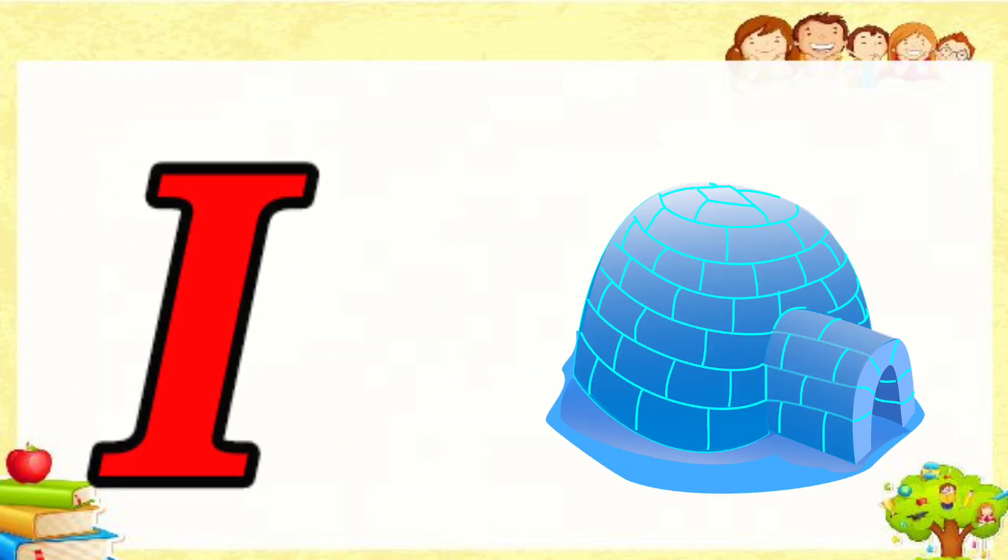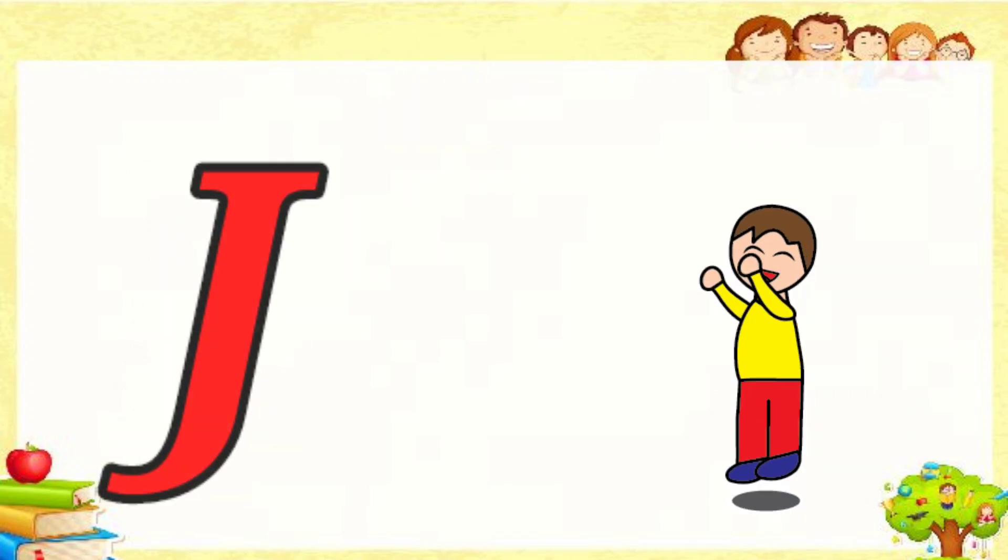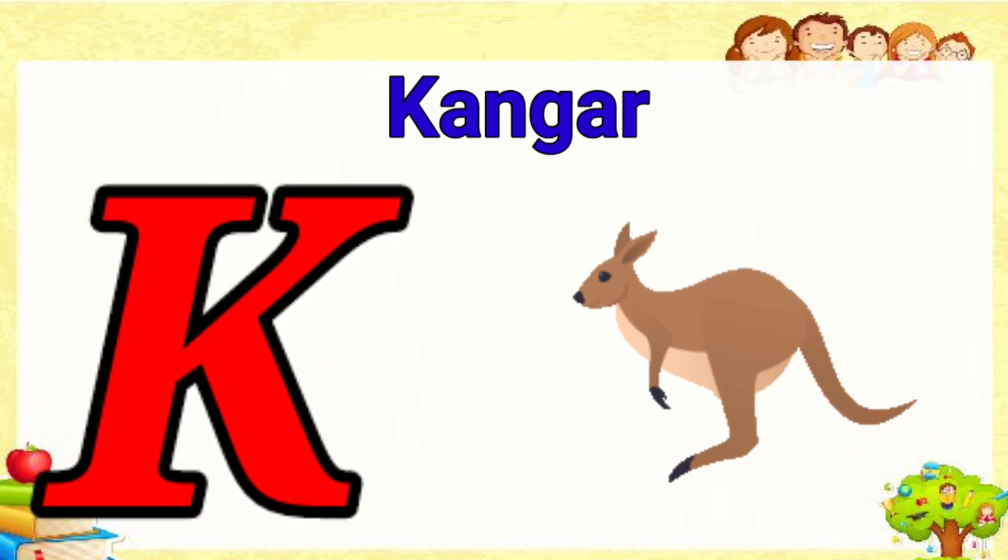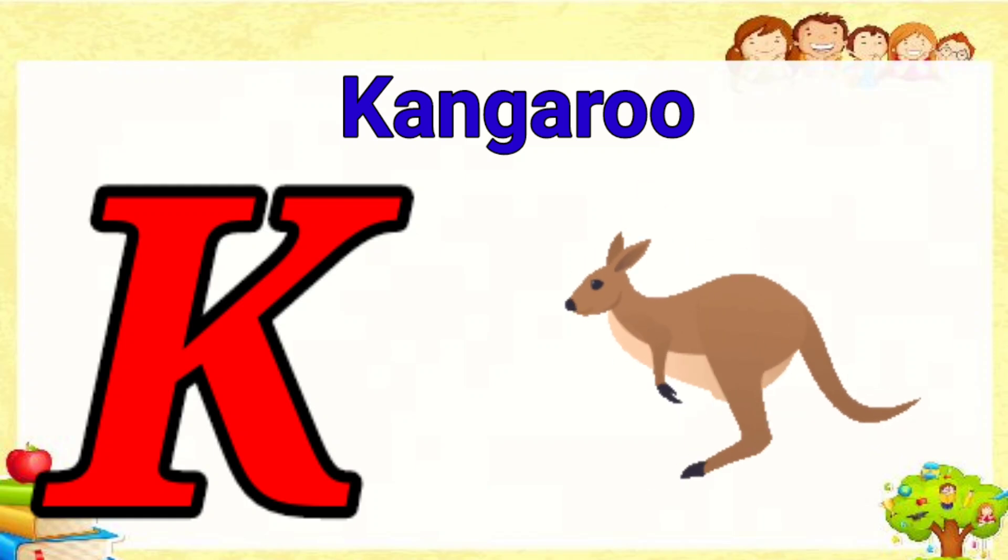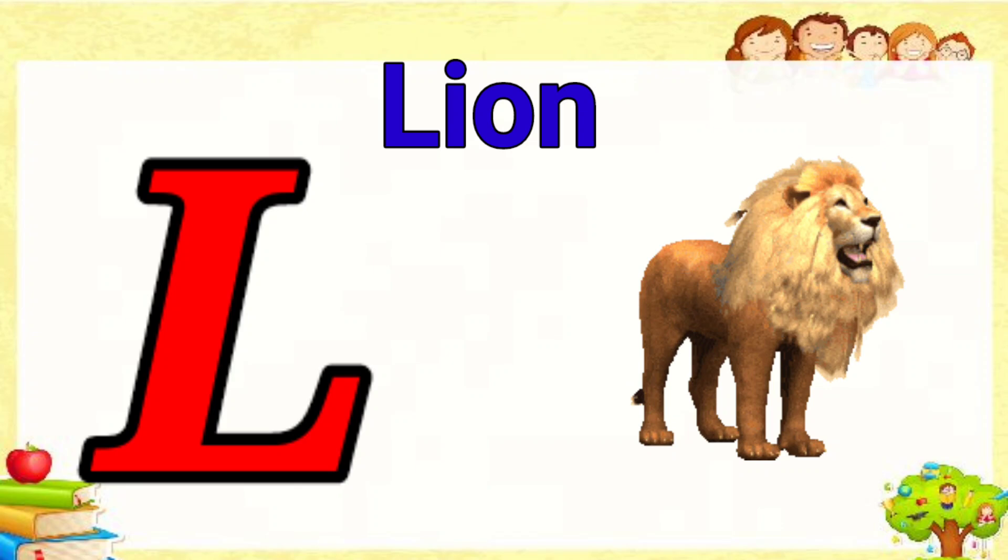I is for igloo, i-i-igloo. J is for jump, j-j-jump. K is for kangaroo, k-k-kangaroo. L is for lion, l-l-lion.